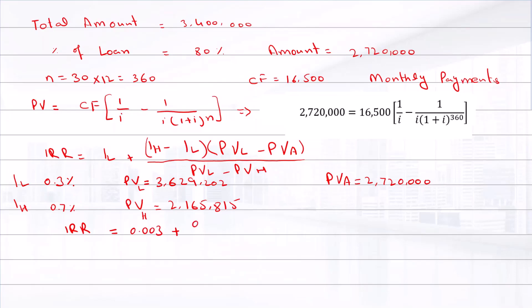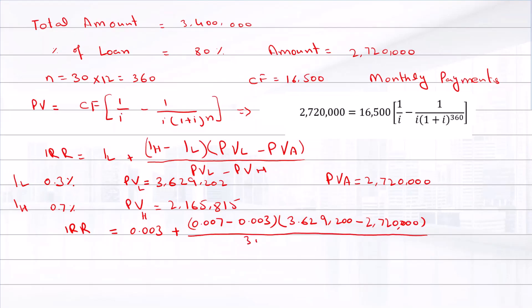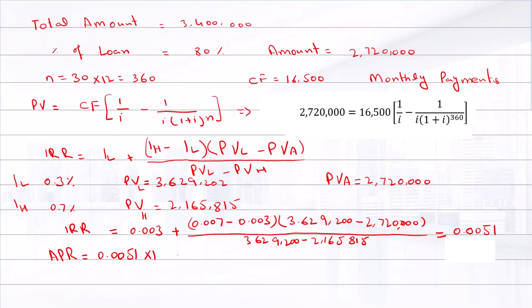The APR is calculated by multiplying the monthly IRR by 12: 0.0051 times 12 equals 6.11 percent.